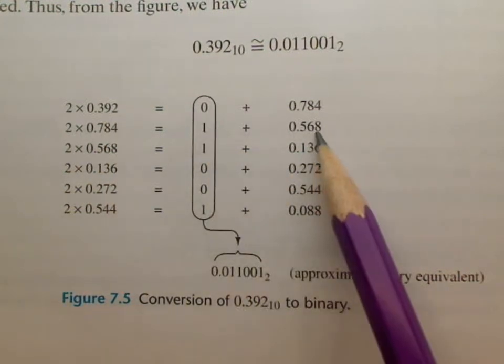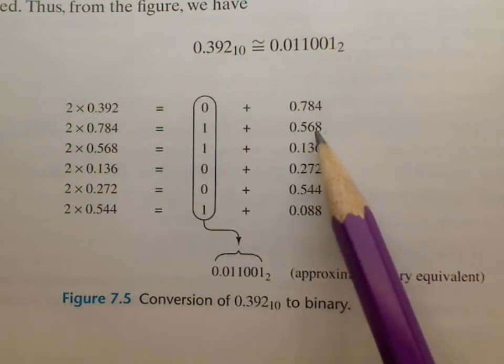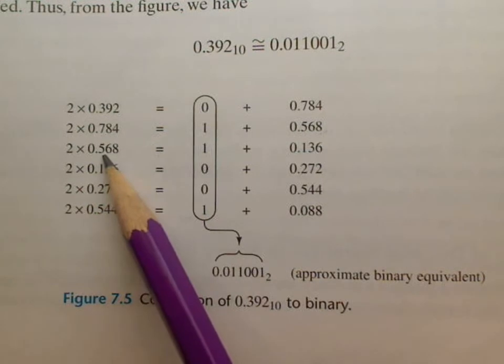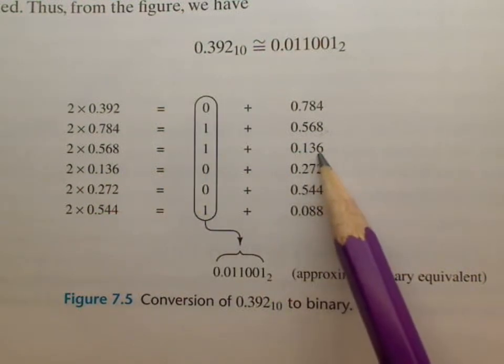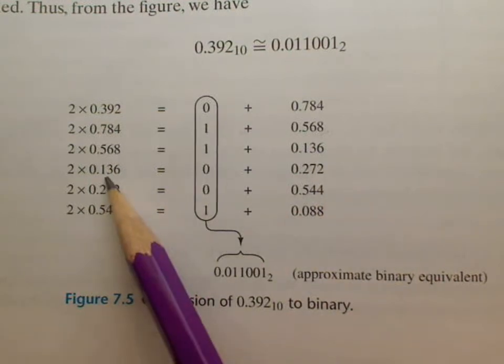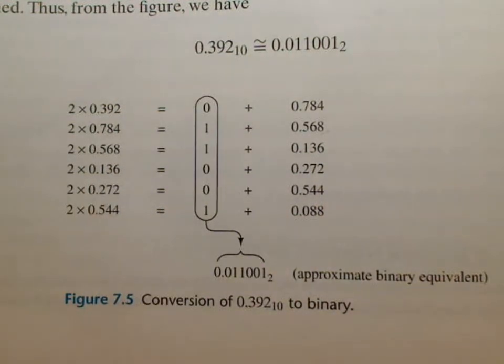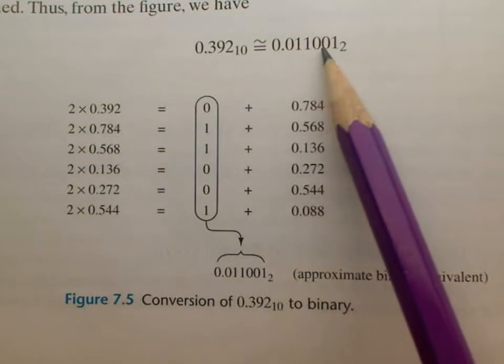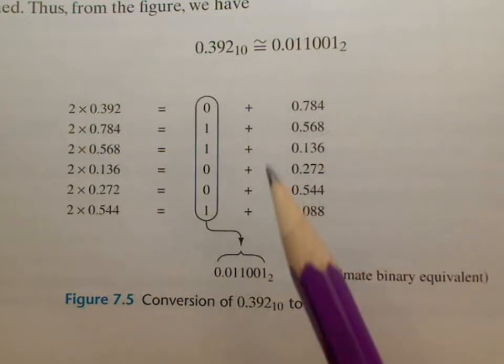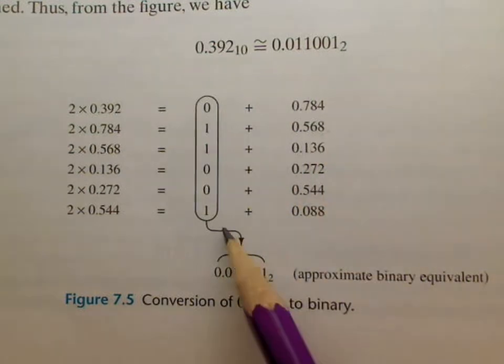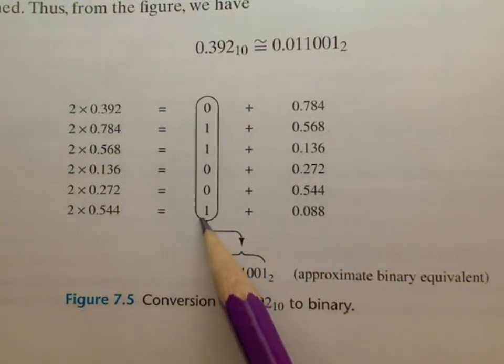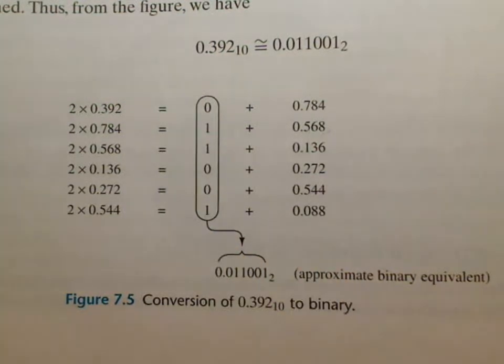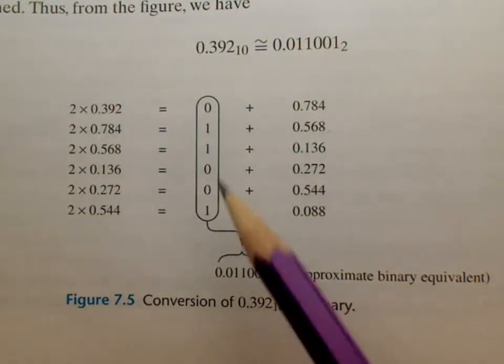And then what you do is you take the .568 here, multiply it by 2 and so forth and you can continue to repeat that process and you can do that until basically you get, I believe it's a 1 right here and a 0 there unless it's going to repeat forever.